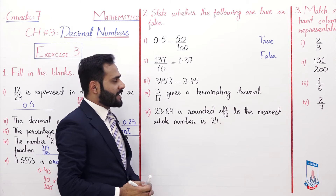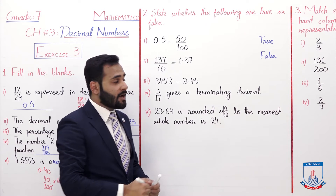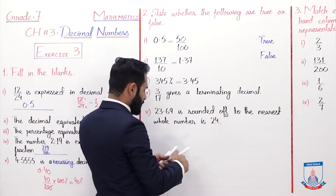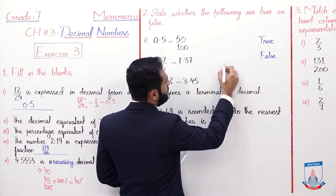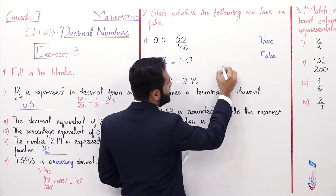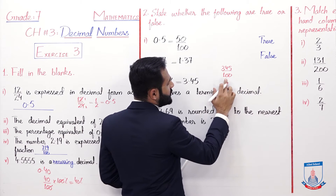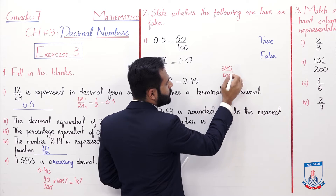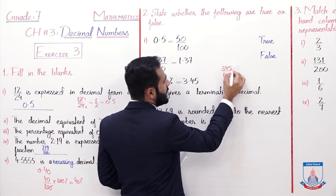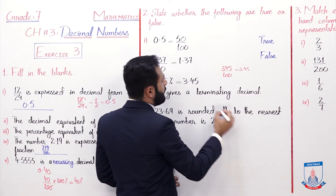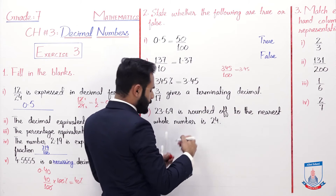The third statement: 345% equals 3.45. Yes, this is true. When you remove the percentage sign, 100 goes to the denominator, meaning two zeros, so the point moves two digits back — it becomes 3.45. True.